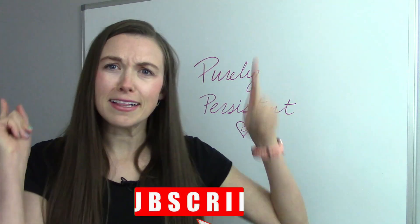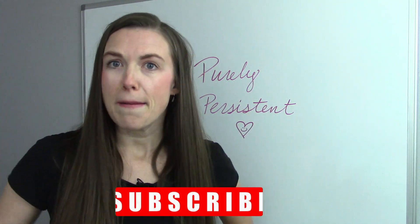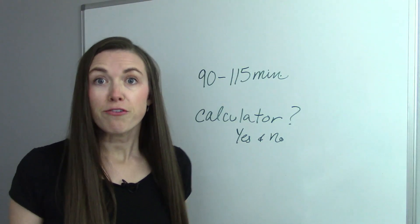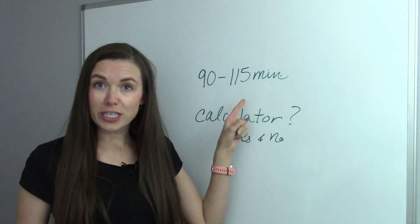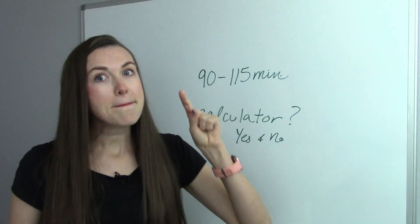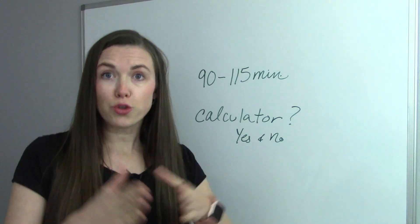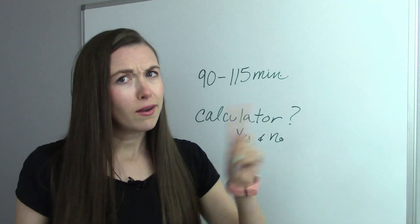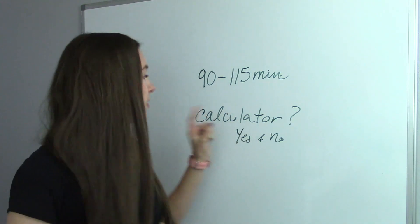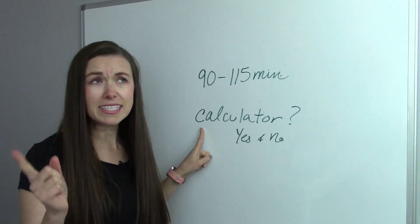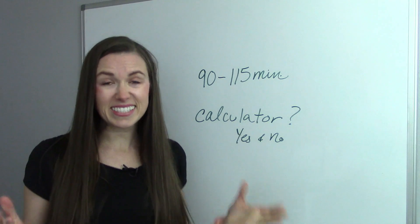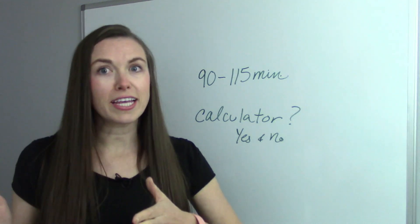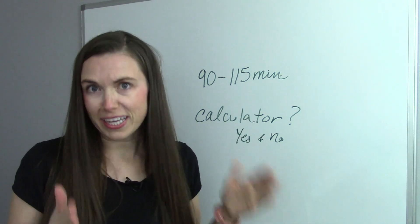The tests range from the HiSET, which is 90 minutes, to the GED, which is 115 minutes. The GED offers a short three-minute break in the middle of the test between its two sections — no break on the HiSET. Do you get a calculator? Yes and no. With the HiSET, you get a calculator for the entire test. With the GED, no calculator at the beginning, but after your break you do get one.